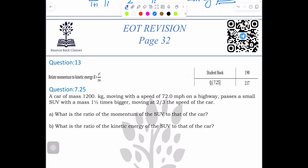In this video we are going to learn about question number 13, based on momentum and kinetic energy and their relationship. First, we should know: momentum p equals mv, and kinetic energy is half mv squared. The relationship between them is kinetic energy equals p squared divided by 2m. You need to learn this formula.